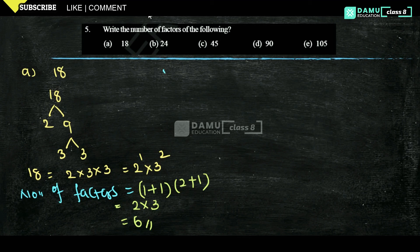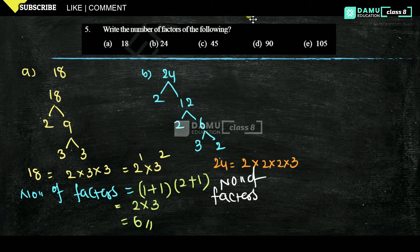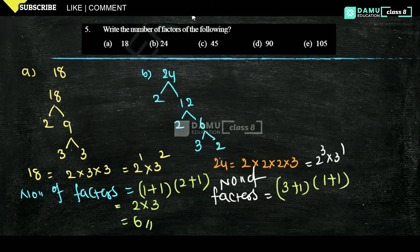Next, 24. Factorize: 24 = 2 × 2 × 2 × 3 = 2³ × 3¹. Number of factors: add 1 to each exponent and multiply. So (3+1) × (1+1) = 4 × 2 = 8 factors.